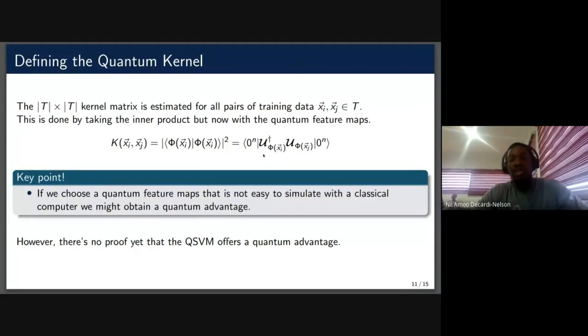So the main goal or the key point is that if you choose a feature map that a classical computer cannot simulate, then you translating it to a quantum computer, you might be able to get some advantage in using the quantum computer. However, there's no empirical proof that that has happened yet.